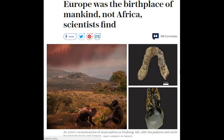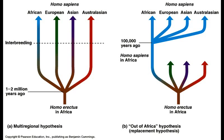So first we have to understand what is meant by the Out of Africa Hypothesis. Simply put, it is that modern humans — that being the species Homo sapiens — originated in Africa 100,000 to 200,000 years ago, and migrated out of Africa with only minor influence from hominid species in the regions migrated to. This is called the replacement hypothesis, which goes hand in hand with the Out of Africa Hypothesis.